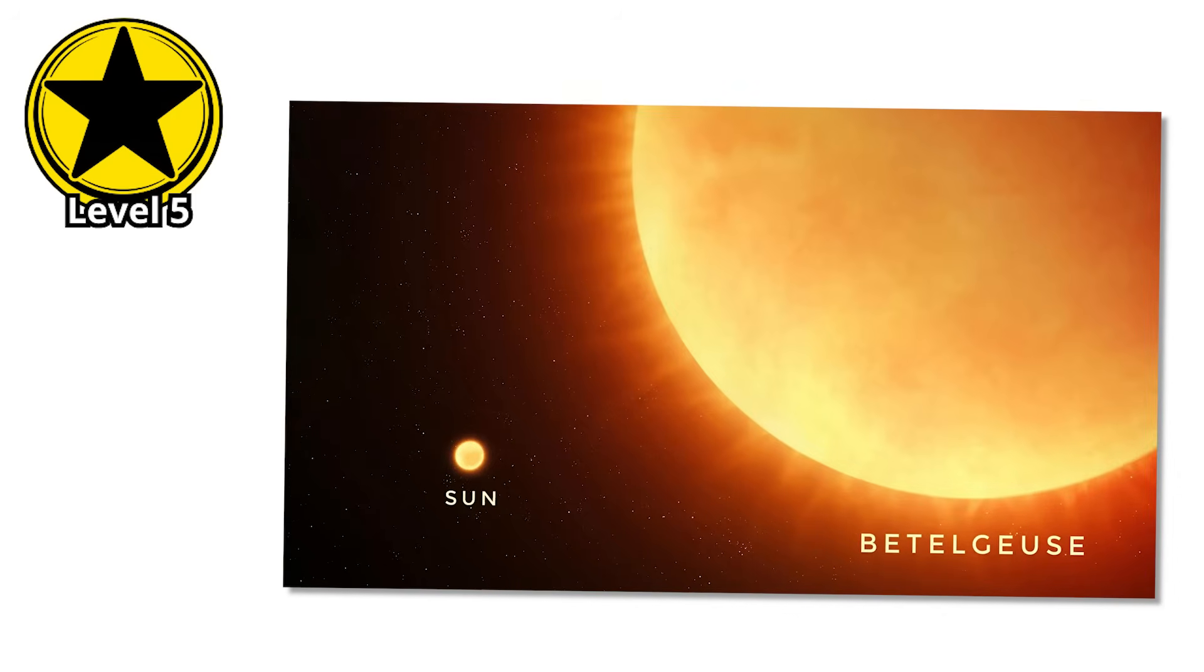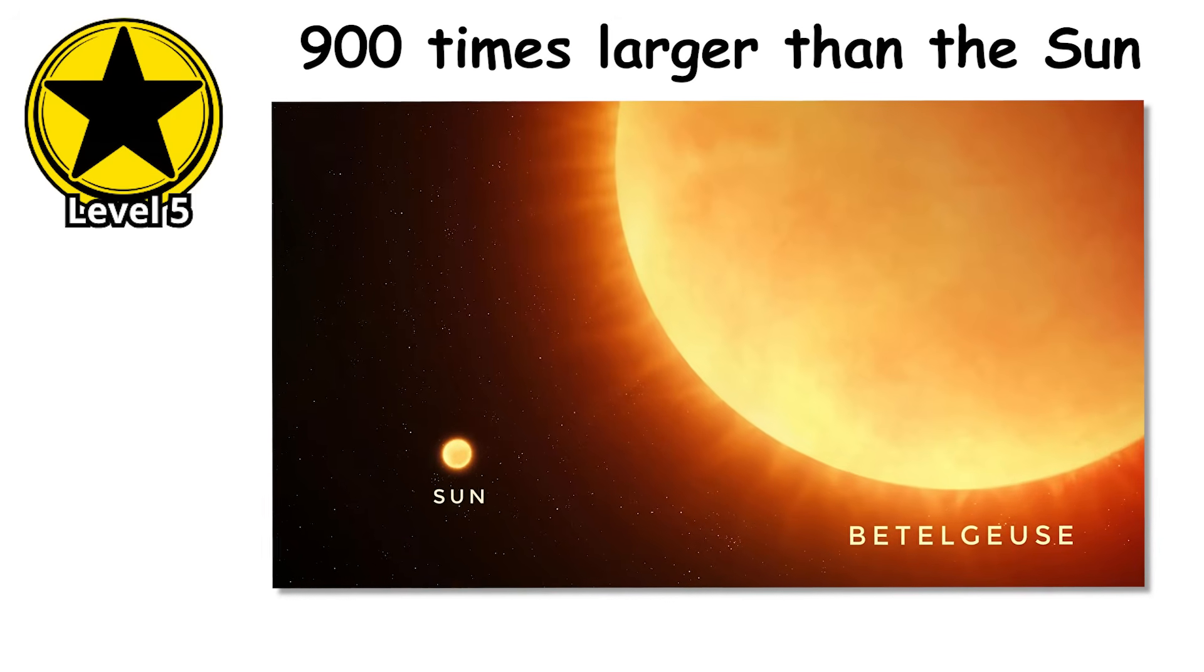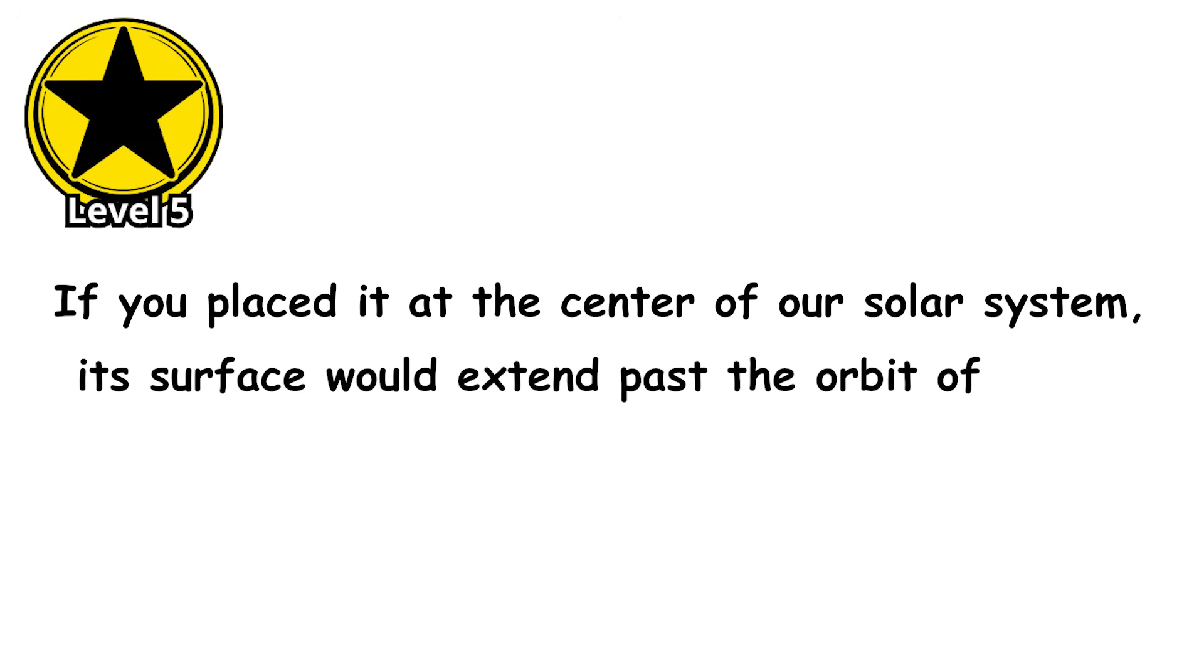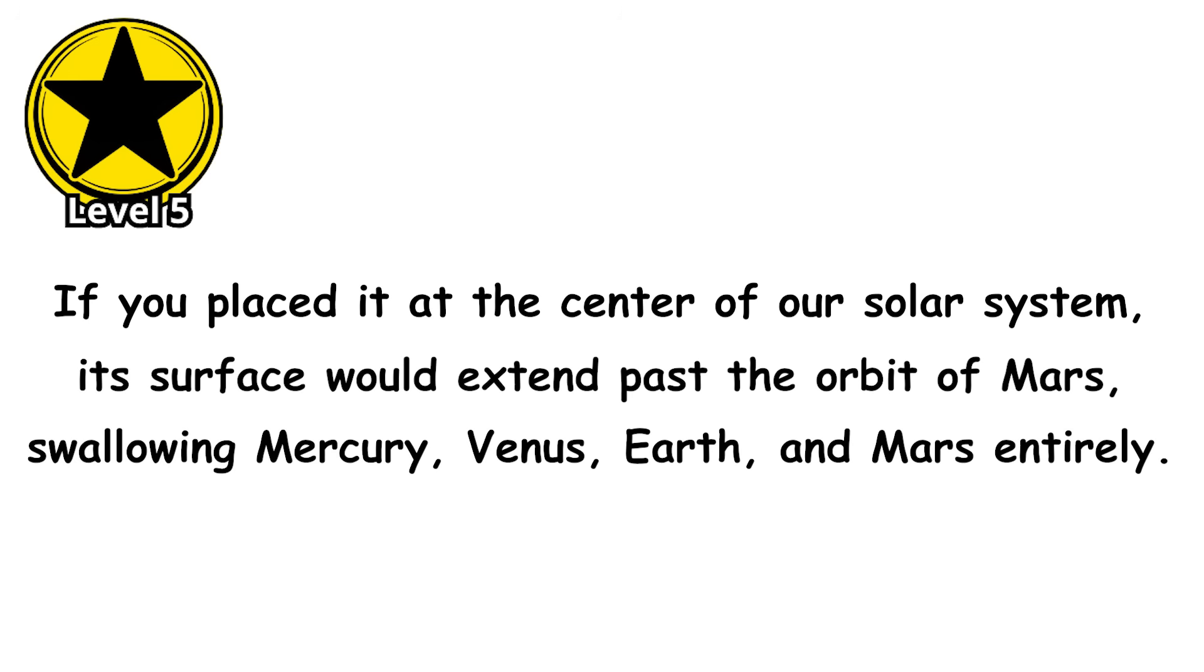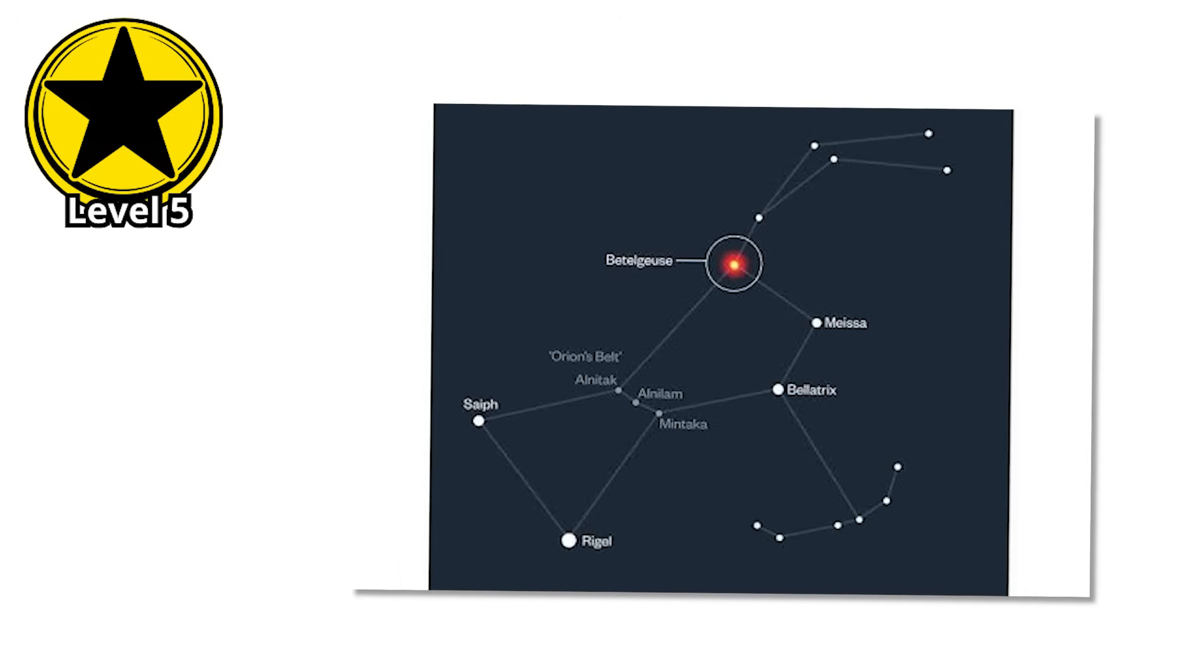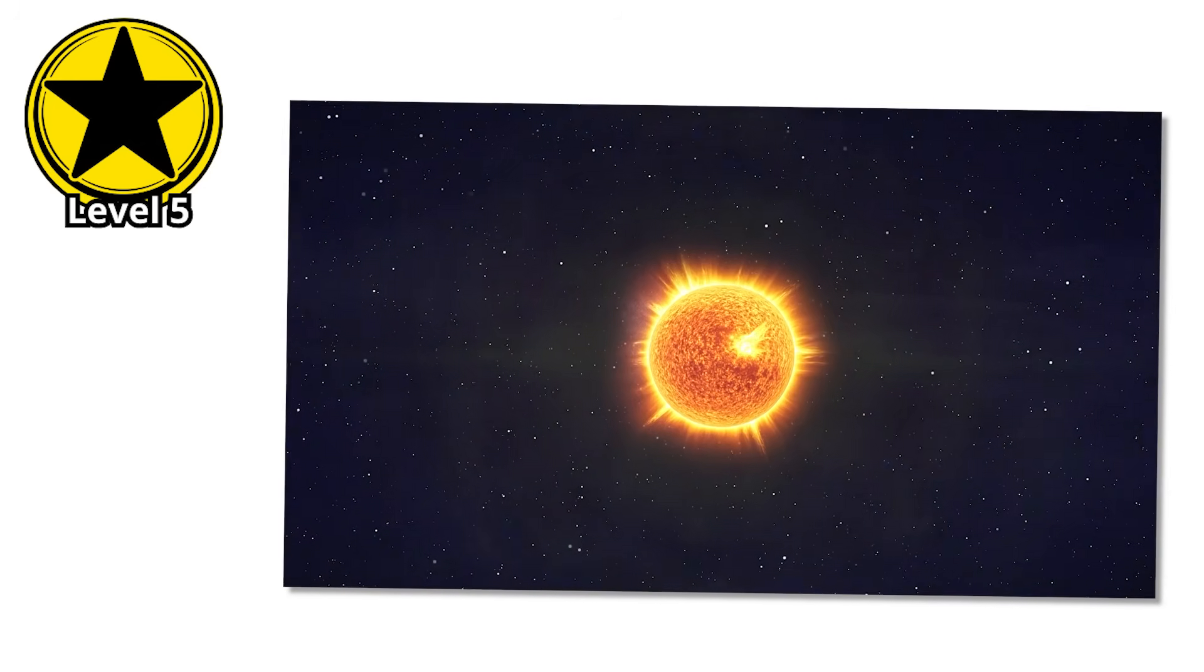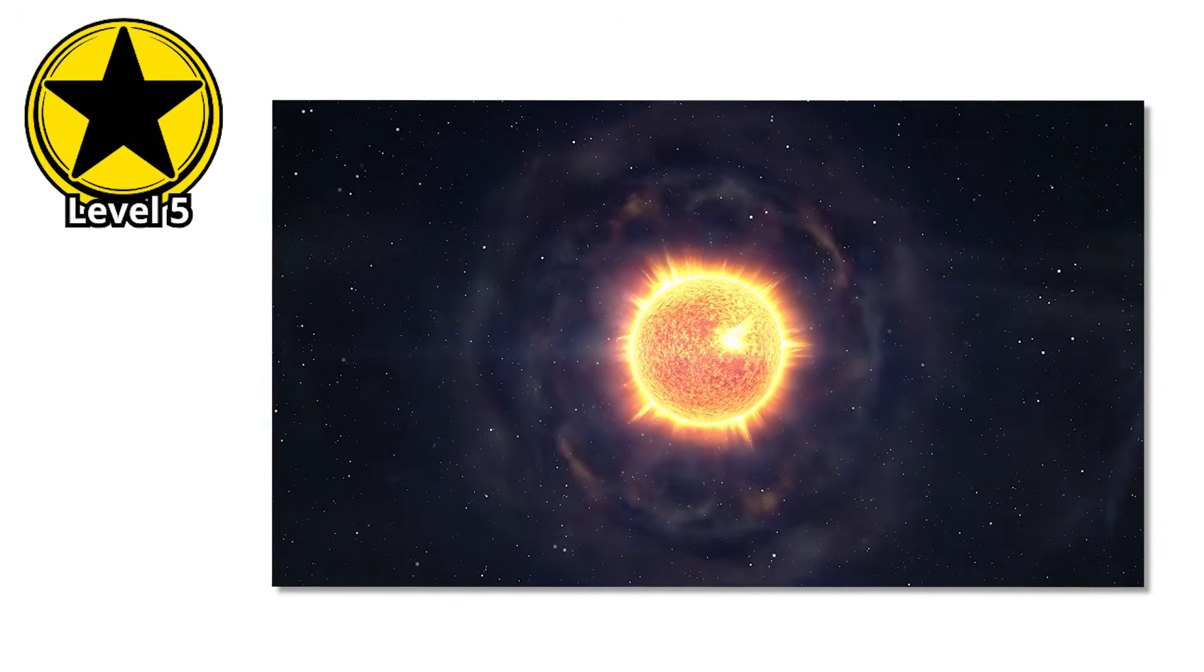Betelgeuse has a radius about 900 times larger than the sun. If you placed it at the center of our solar system, its surface would extend past the orbit of Mars, swallowing Mercury, Venus, Earth, and Mars entirely. Yet despite its size, it's only about 10 to 20 solar masses. It's a balloon, a vast shell of gas held together by gravity.